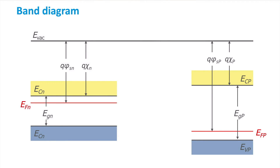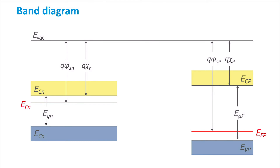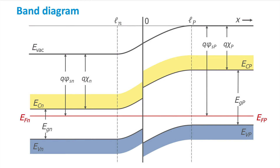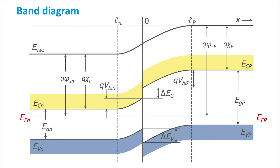Now we can continue with the band diagram. When the two materials form an interface, the Fermi levels align. The bands of the n-type material then bend upwards, and those of the p-type material bend downwards, similarly as we have seen for a p-n homojunction. The vacuum level is continuous and bends with the depletion region. The width of the depletion region is indicated by Ln and Lp. The difference between the valence band edges and conduction band edges is assumed to be the same as when the two materials were separate, following the electron affinity rule. The band bending results in a built-in voltage in both n-type and p-type materials, which is also visible in the vacuum level offset. These two voltages add up to the total built-in voltage.